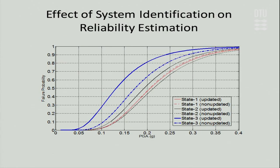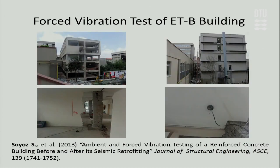You can see that the damage states are different for each level of strong motion. At each damage state, we perform one more non-linear time history analysis for updated and non-updated models to produce fragility curves. For example, consider a highway bridge that experiences an earthquake with an unknown damage level — using finite element models and instrumentation data you estimate the damage. We can then use these fragility curves and see that the probability of failure is different for updated versus non-updated models.